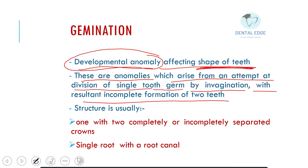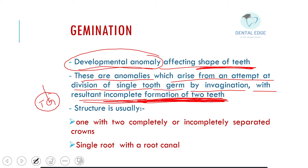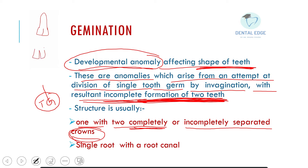It is an anomaly in which one single tooth germ — for example, if this is a tooth germ — there may be an attempt to divide this single tooth germ by invagination, resulting in incomplete formation of two teeth. Instead of one tooth, we get incomplete formation of two teeth. It will result in a structure with two completely or incompletely separated crowns.